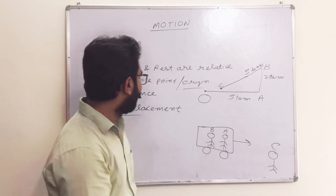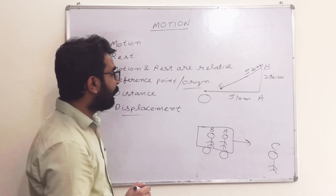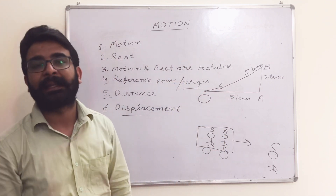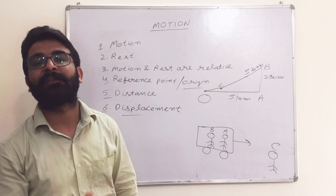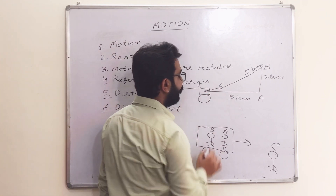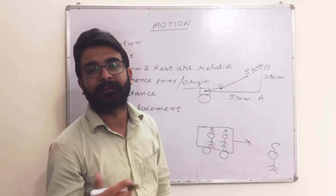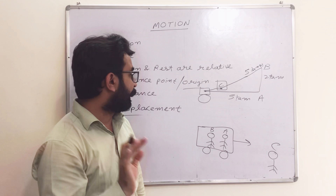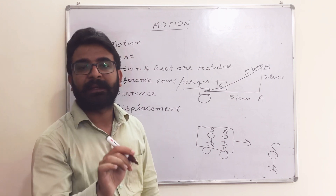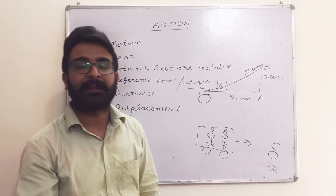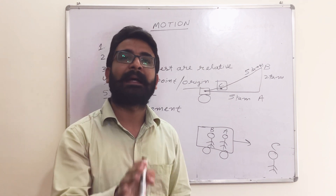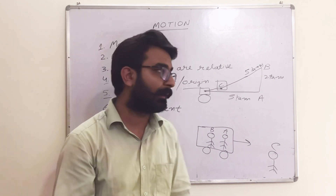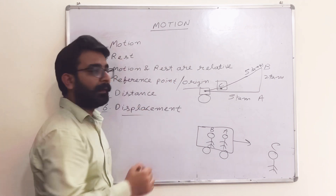Now what is displacement? Displacement is the distance between the initial point and the final point — that is, the shortest distance between your initial position and your final position. So while the total distance covered may be twelve kilometers, the displacement is the straight-line distance from where you started to where you finished.